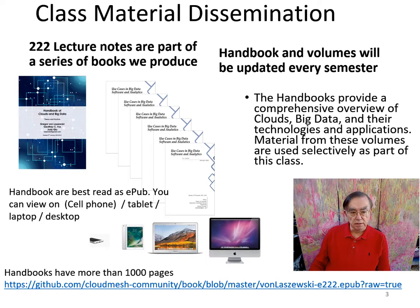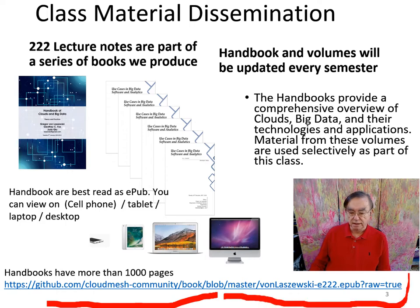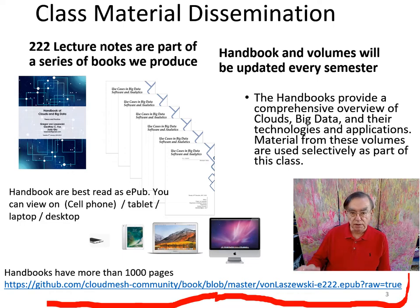We take all the material stored in GitHub and it's automatically made into books, handbooks, or lecture notes. We have many examples of this, including background handbooks of other students' projects. These are very large — thousands of pages — and you can see a link here to find them. This is the E222 EPUB, but there will also be links to other courses: 516, 616, which are supported with the same broad technology but more advanced, along with various supporting handbooks. We use EPUB technology, which is designed for the digital world.